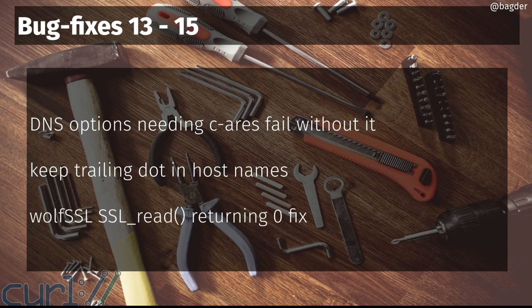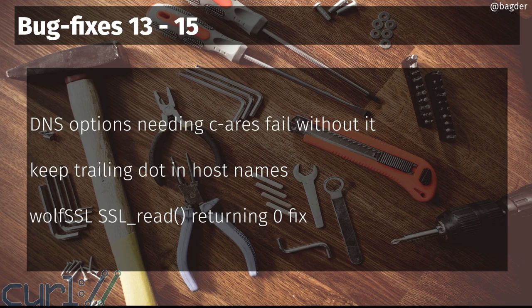A fun thing I fixed in this release is that we didn't really handle return code zero when reading TLS data in the WolfSSL backend. This bug had existed for such a long time and nobody had discovered it before. It was pretty bad in that curl would misbehave and think the connection had closed when it really hadn't. We fixed it — it's better now. If you're using the WolfSSL backend, you really want this fix.